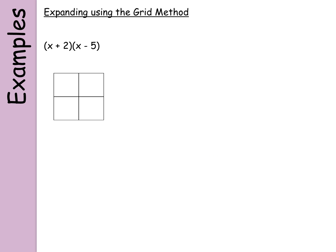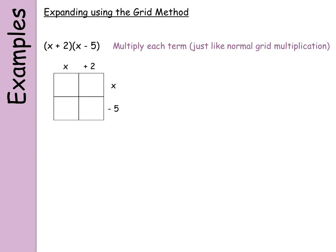My process is still exactly the same. I split the first bracket into x and plus 2, and the second bracket into x and minus 5. I've kept the signs — the plus with the 2 and the minus with the 5 — as that will help when multiplying out to get the correct signs. Multiplying each term: x times x gives x squared, plus 2 times x gives plus 2x, minus 5 times x gives minus 5x, and plus 2 times minus 5 gives minus 10 because a positive times a negative gives a negative answer.